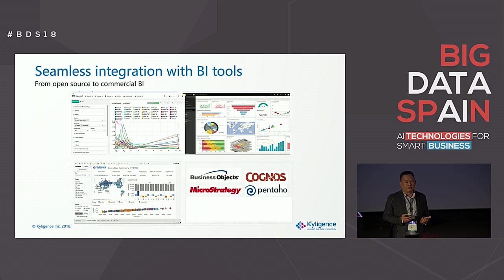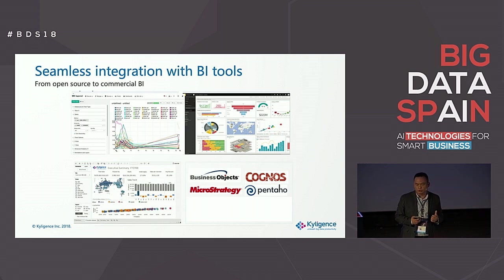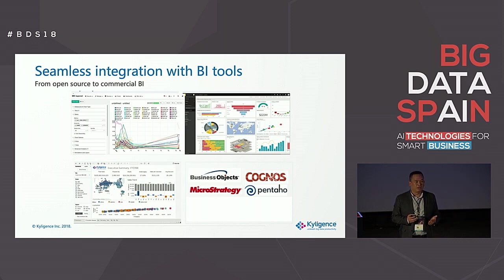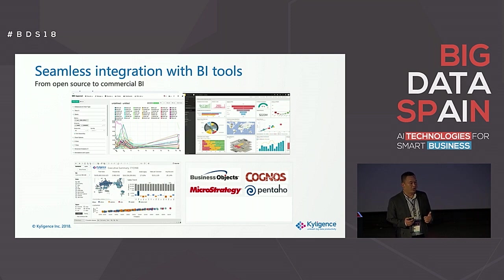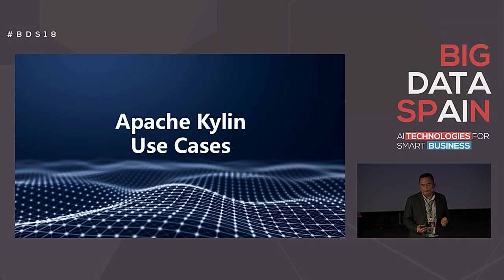We integrate with BI tools very well. Today you can use any open-source BI tool — Hue, Zeppelin, Superset — interacting with Kylin services. For commercial tools, most commercial BI tools are already certified and integrated. Just last week, Microsoft released the latest version of Power BI, which packaged our enterprise connector inside it, so it's very easy to use.